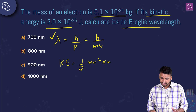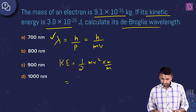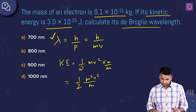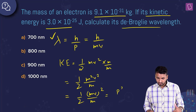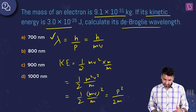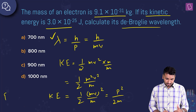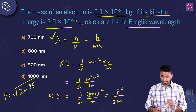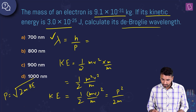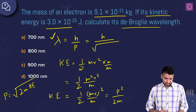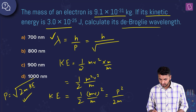Kinetic energy = ½mv². Multiplying and dividing by m gives KE = (mv)²/2m = p²/2m. Therefore, p = √(2m × KE). Substituting into λ = h/p gives λ = h / √(2m × KE). Now we put in the values: h = 6.6 × 10⁻³⁴, m = 9.1 × 10⁻³¹ kg, and KE = 3 × 10⁻²⁵ J.